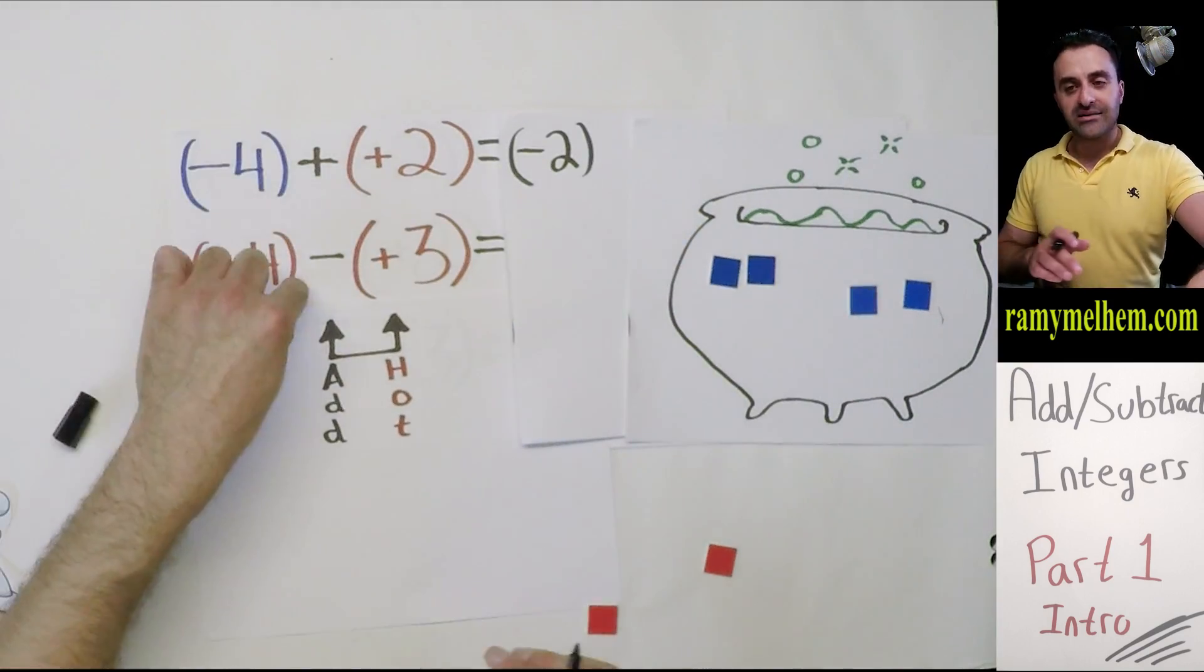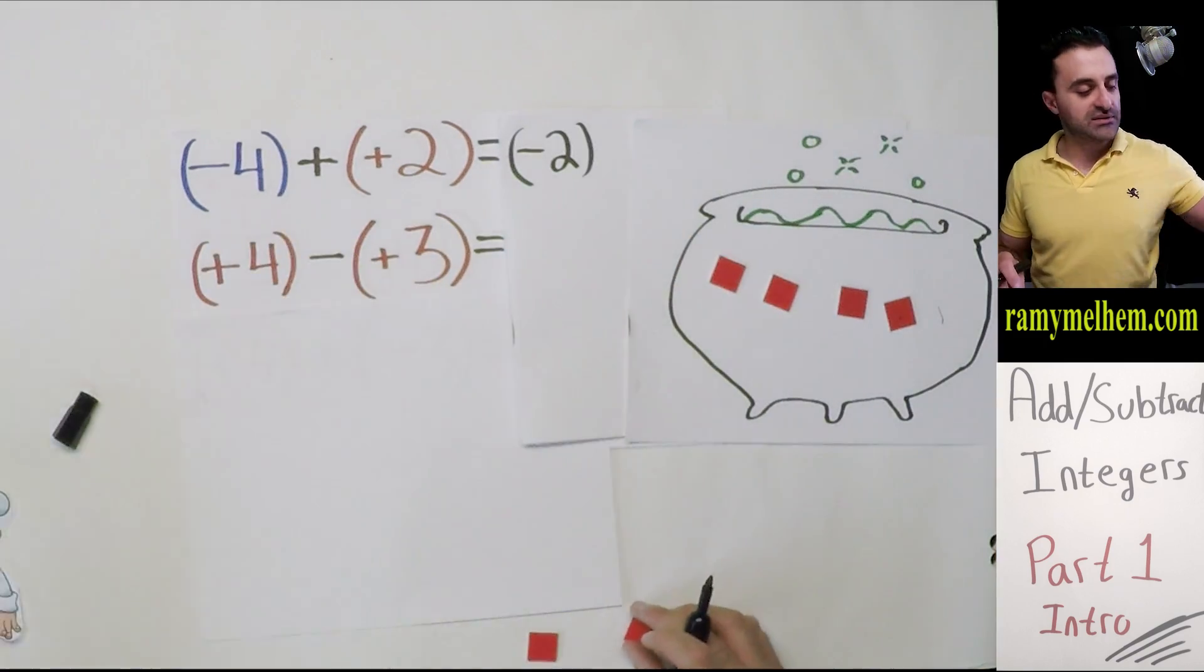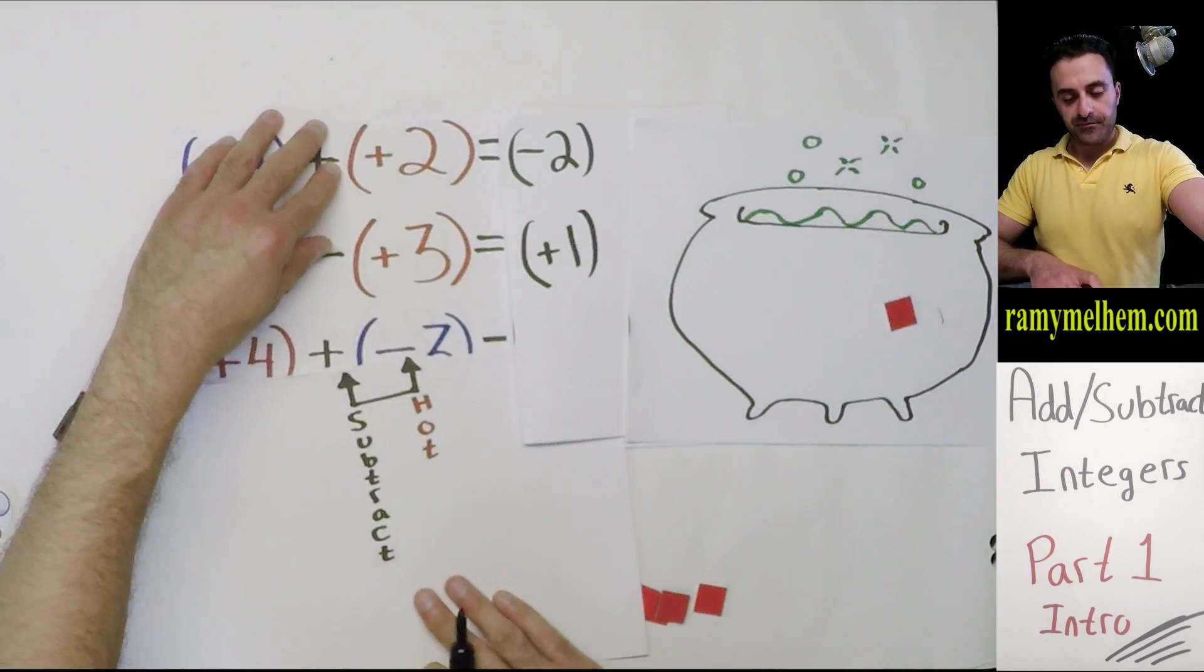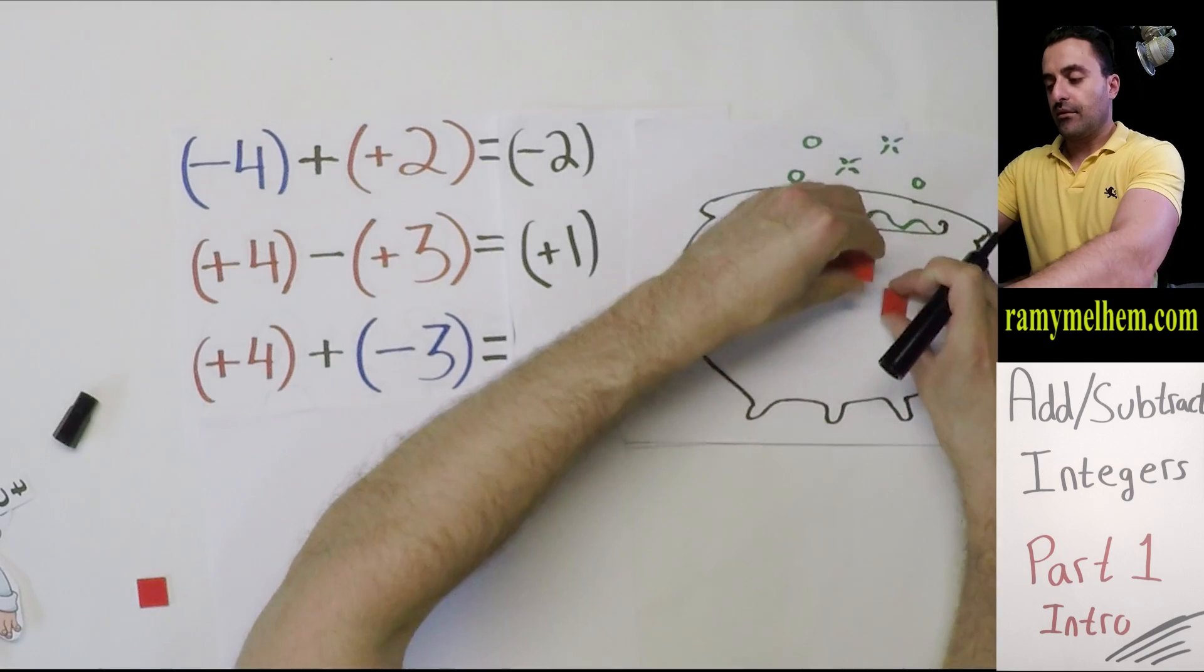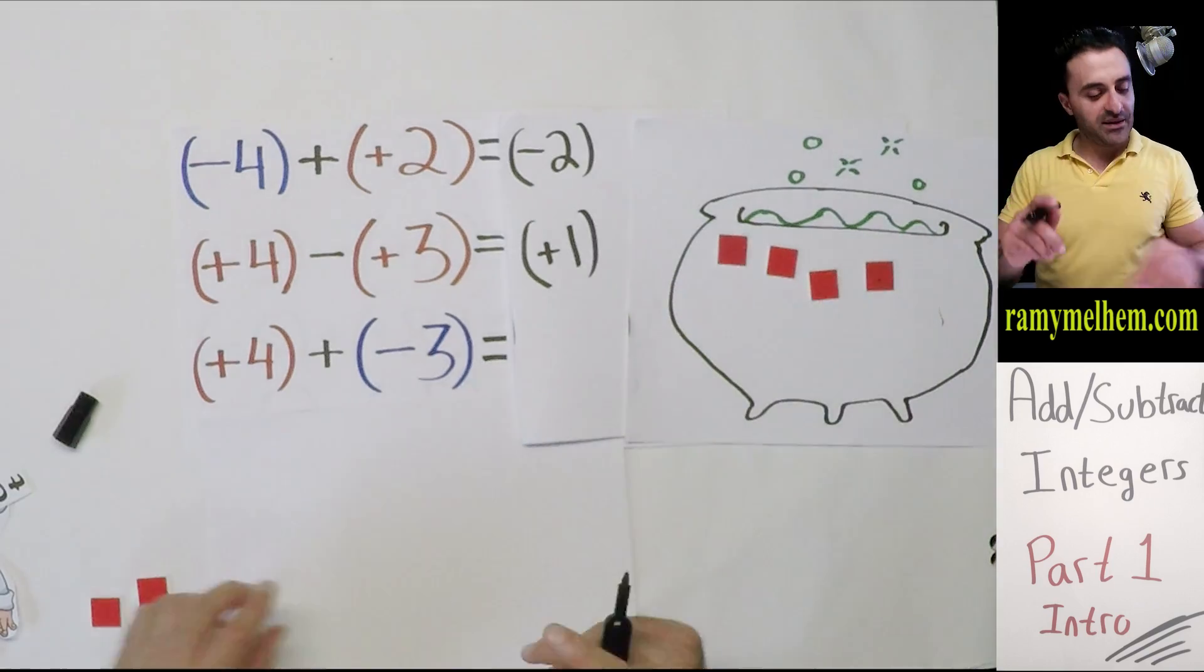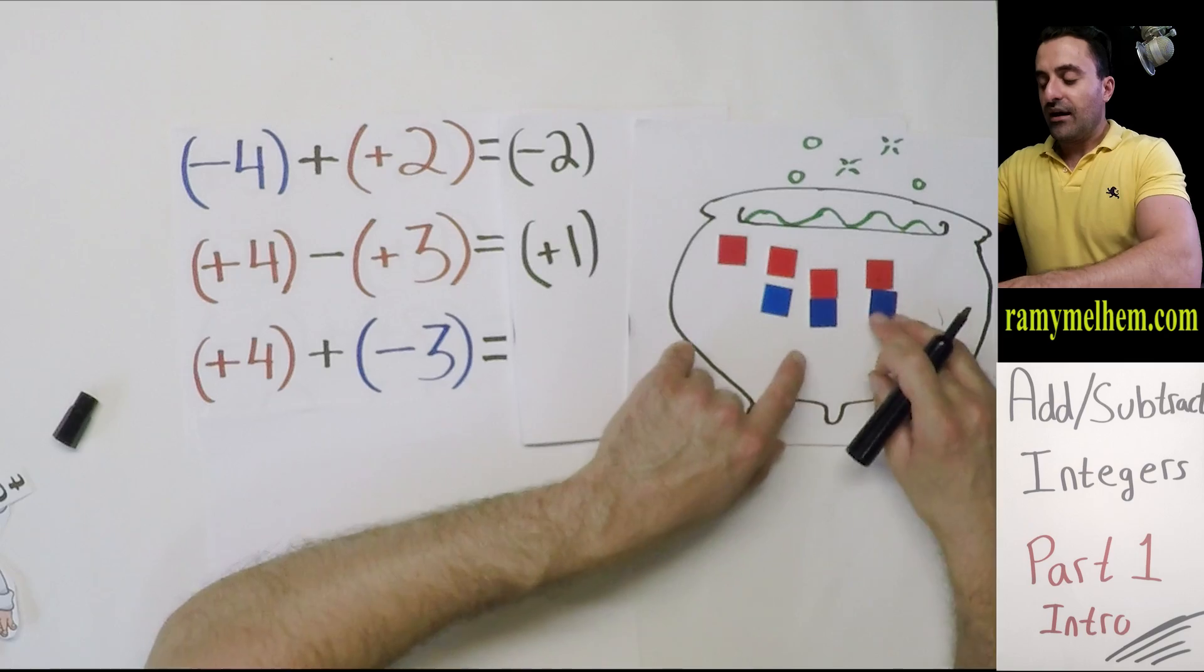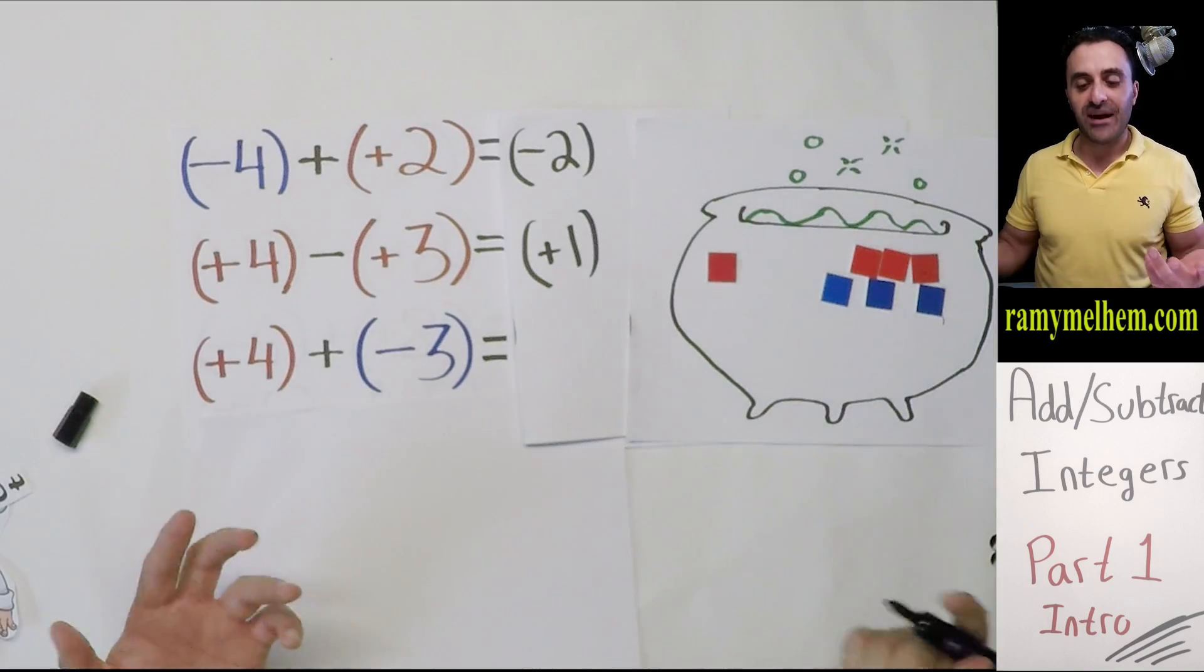Positive four - I've got four hot cubes. I'm going to subtract three hot ones. Just go in and subtract them out, you get positive one. Now positive four again, but I'm not going to subtract three hot ones like I did before. I'm going to add three cold ones. They go in and there's so much distraction going on that none of these can do their jobs anymore - it's like they're not there. I just get positive one again.